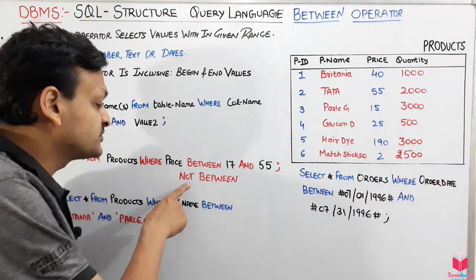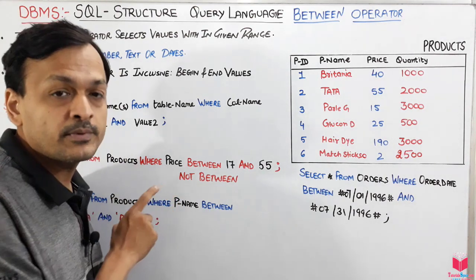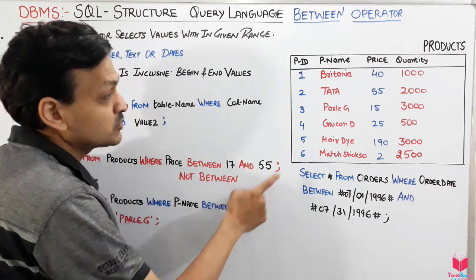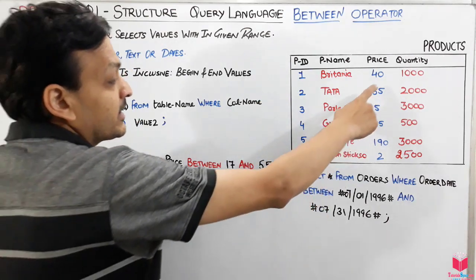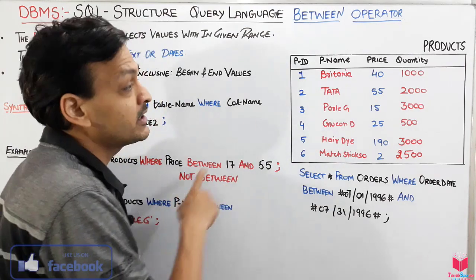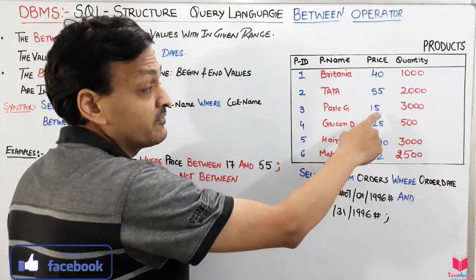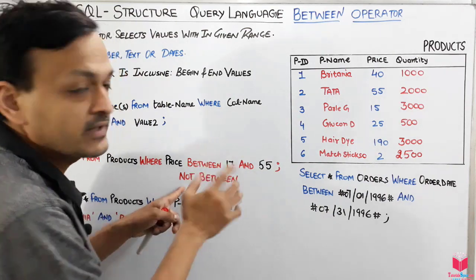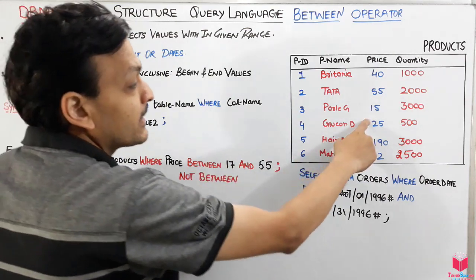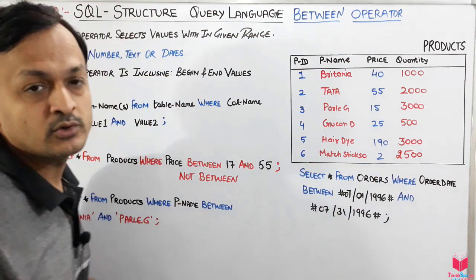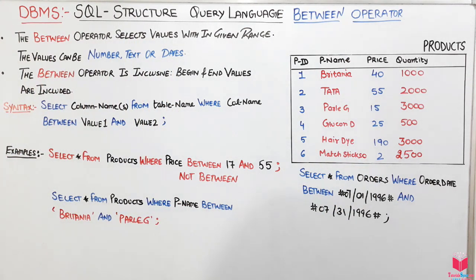BETWEEN can also be used with the NOT operator, which will exclude the specified range. So from the same example, 40 will not be included, 55 will not be included, 15 will be included because it is outside that range, 25 will not be included, and 192 will be included.